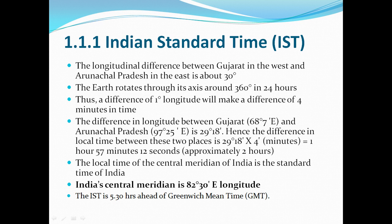The longitude of Gujarat is 68 degrees 7 minutes east and Arunachal Pradesh is 97 degrees 25 minutes east. The total difference is 29 degrees 18 minutes. Hence, the local time difference between these two places is 29 degrees 18 minutes in longitude.